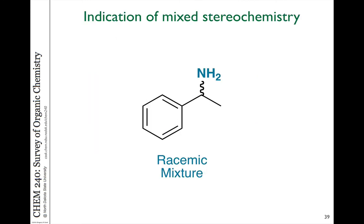One final note about stereochemistry: if you see a molecule written with a squiggly line, that indicates that the stereochemistry is a mixture — we're not drawing it with a bold or a dashed line, but with a squiggly line. If we use a single plane line, that indicates it's in the plane of the page or not determined. The squiggly line indicates specifically that we have a mixture of two enantiomers, or two configurations, at that center.